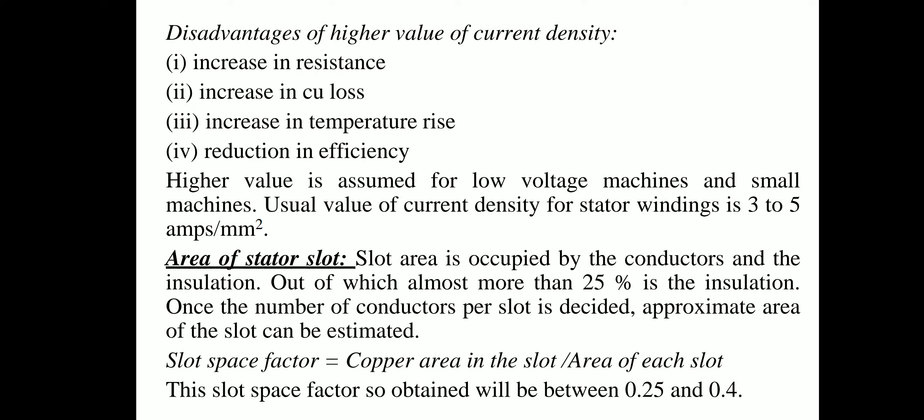The slot area is occupied by conductors and insulation, of which more than 25% is insulation. Once the number of conductors per slot is decided, the approximate area of the slot can be estimated. The slot space factor is defined as the copper area in the slot per total area of each slot, and this factor lies between 0.25 and 0.4.